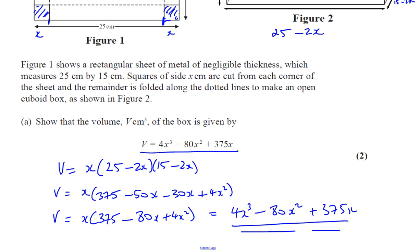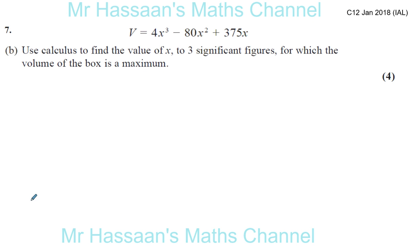Now part B says: use calculus to find the value of X to three significant figures for which the volume of the box is a maximum. To find the maximum or minimum of any expression like this, we need to find the turning points — the places where the gradient of the curve is zero. So we need to find the gradient function, dV/dx.